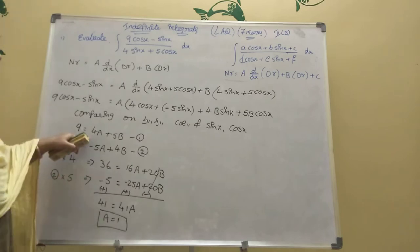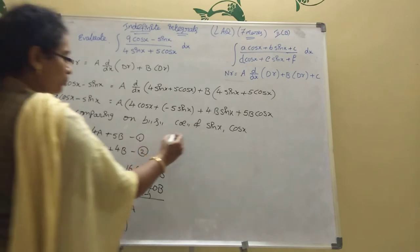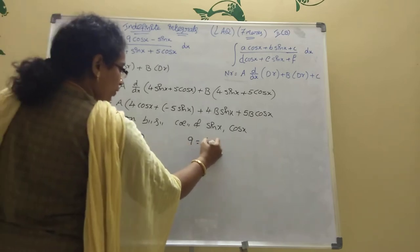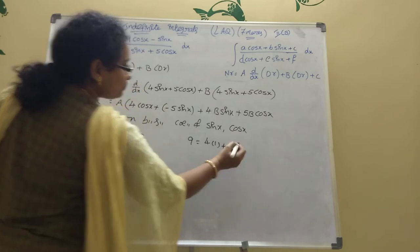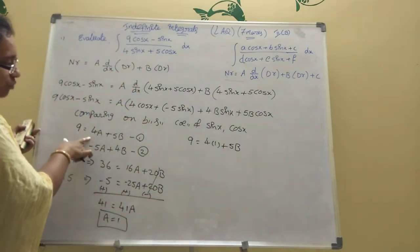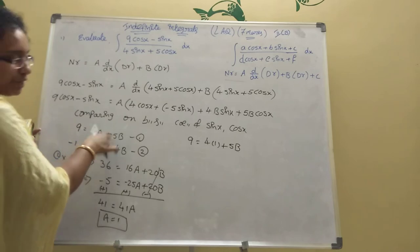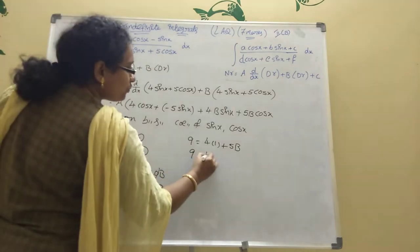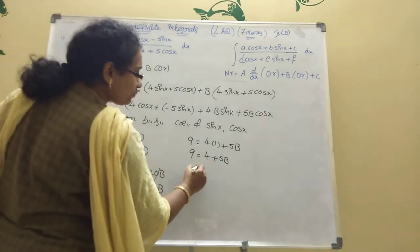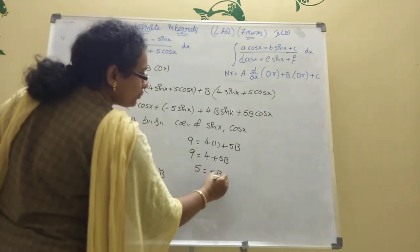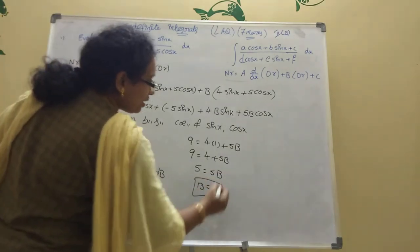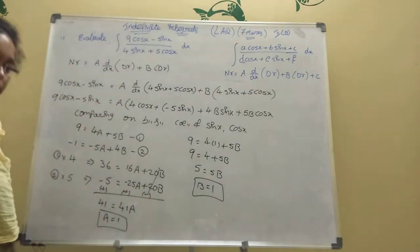Now with A equal to 1, substitute into equation one: 9 equals 4 into 1 plus 5B. So 9 equals 4 plus 5B, meaning 5 equals 5B, therefore B equals 1. Both A and B equal 1.